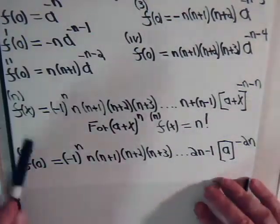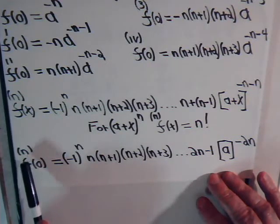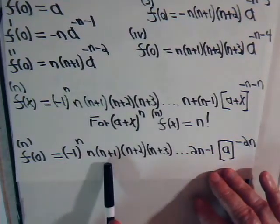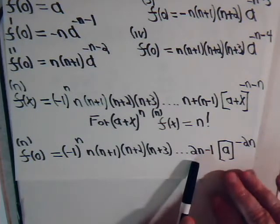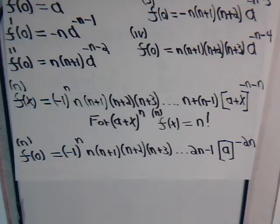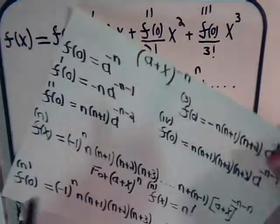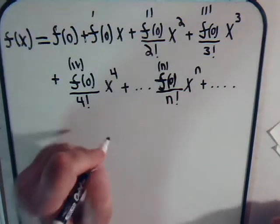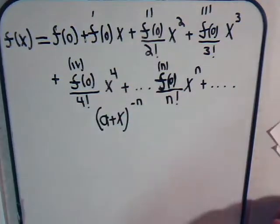If this is our nth derivative, then when x is 0, this is going to be minus 1 to the n — and depending upon whether n is even or odd, this would be plus or minus. We have n times n plus 1, times n plus 2, and so forth, and the last term is 2n minus 1. When x is 0, that's just a to the minus 2n power.